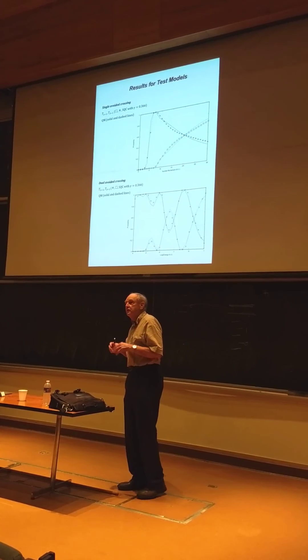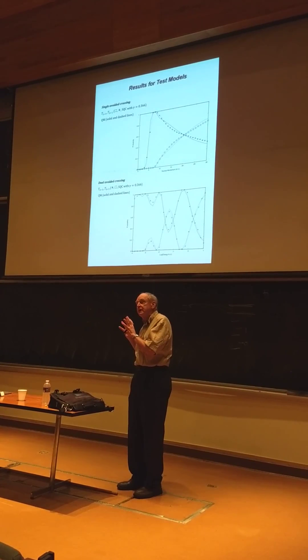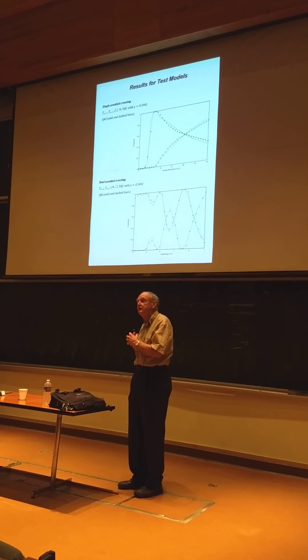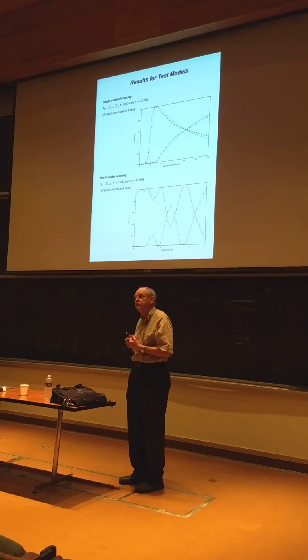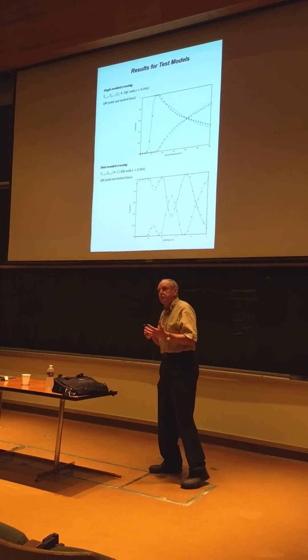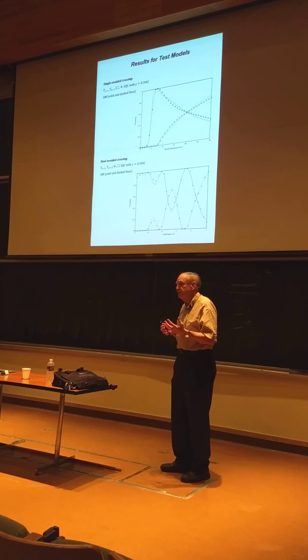You see, of course, it's not perfect, but it does very well. This is the double curve crossing problem. This is more interesting because you see it's getting these... This is the transition probability versus energy. You see it's getting these Stueckelberg oscillations. Again, not perfectly, but extremely well.